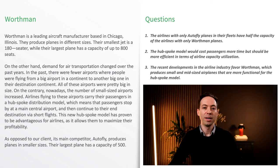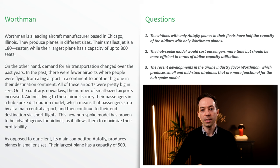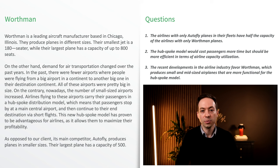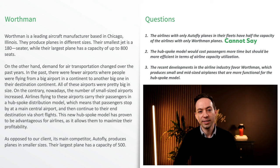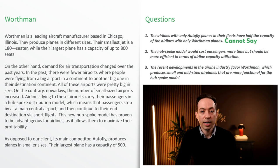This passage compares large-scale aircraft manufacturer Werthmann with smaller plane producer Autofly amidst evolving air travel trends. Feel free to pause this video now and read those paragraphs. First question: the airlines with only Autofly planes in their fleets have half the capacity of the airlines with only Werthmann planes. The answer should be cannot say — it's unclear from the information provided. On a per-plane basis, we know Autofly planes have a capacity of 800, whereas Werthmann planes have 500. But the total capacity also depends on how many of each type of airplane the airlines have.